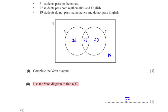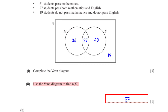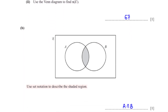Use the Venn diagram to find the number of students who passed English: 27 + 40 = 67. Use set notation to describe the shaded region: the region common to sets A and B, described as A ∩ B.